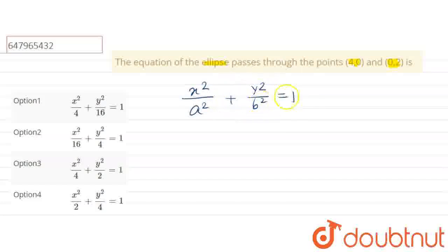We can place these values using the two given points. We'll substitute the coordinates into this equation. First, we'll substitute the point (4,0) into the equation.